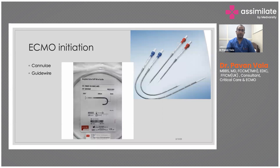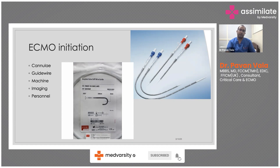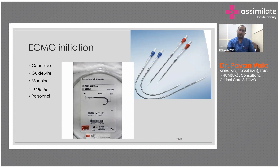The same Seldinger technique is used for the jugular cannula as well. You need a guidewire, cannulas, and the machine prepped by the perfusionist. Different centers use different imaging — ideally fluoroscopic guidance — but we do it under ultrasound guidance at the bedside. VV-ECMO can be done bedside if you're experienced enough, though risks of bleeding and vascular complications are significant with these large cannulas. You need at least two doctors who can cannulate plus a perfusionist and standby staff.